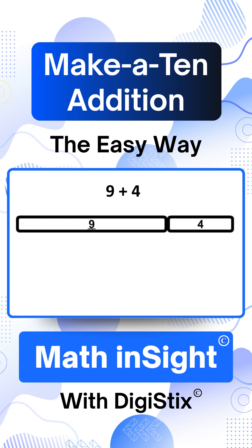9 plus 4. This shows the addition 9 plus 4. 9 and 4 together make a number over 10, which we show like this.